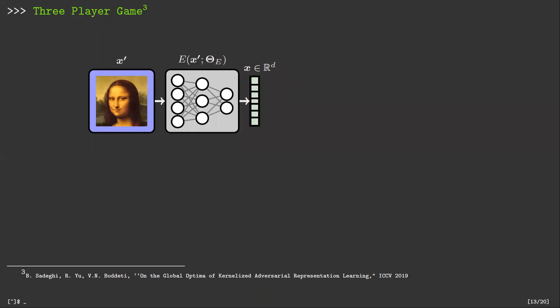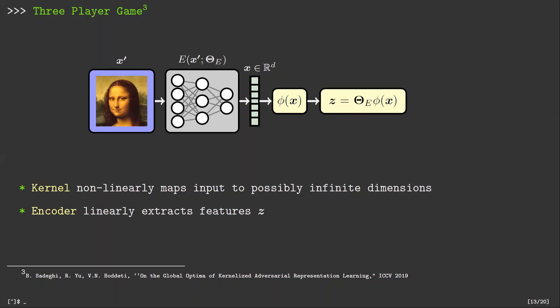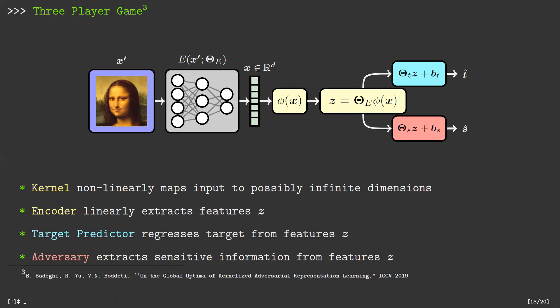To achieve this, we deployed a non-linear kernel on the already learned representation. The resulting output of kernel can be of infinite dimension. Then, we utilized a linear encoder on top of the kernel output. At the end, we modeled both the target predictor and the adversary by linear regressors.